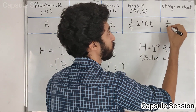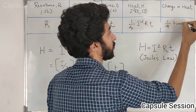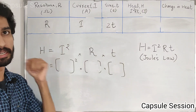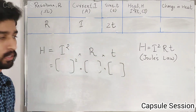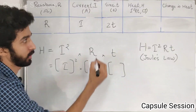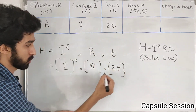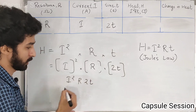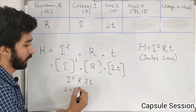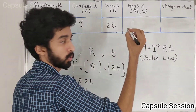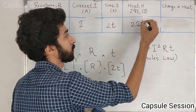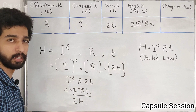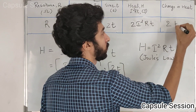In the next case, there is no change in the current. Time is 2 times. So I value I, R value R, and time 2T. I multiply I² into R into 2T and I get 2 into I²RT, so I get 2 heat. So this change in heat is 2 times.